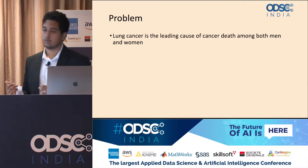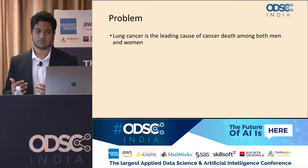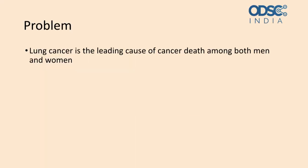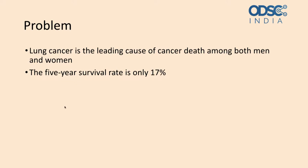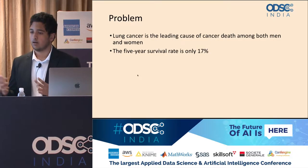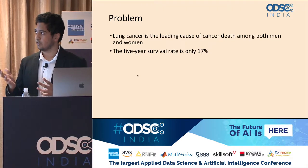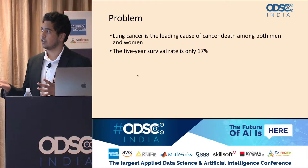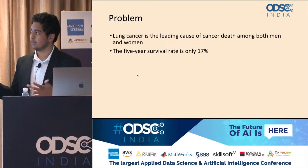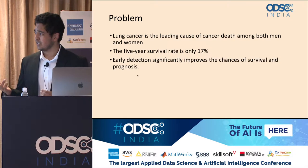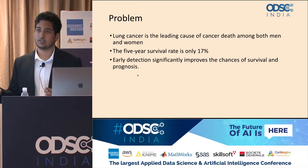Lung cancer is a leading cause of cancer death among both men and women in the United States, with around more than 100,000 deaths a year in the U.S. alone. The five-year survival rate is only 17%. When we look at why the survival rate is so low, early detection can really improve the chances of survival. However, many times by the time the lung nodule or the cancer is detected, it's already too late for intervention and good treatment. So early detection of malignant lung nodules can significantly improve the chances of survival and prognosis.